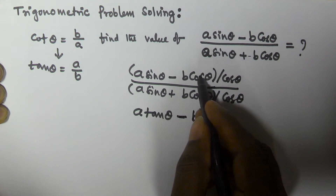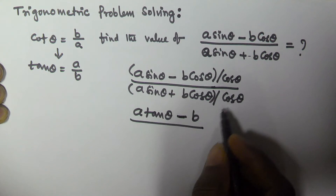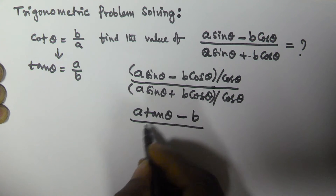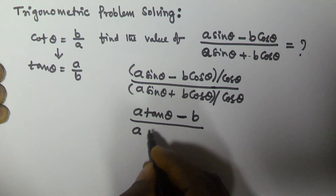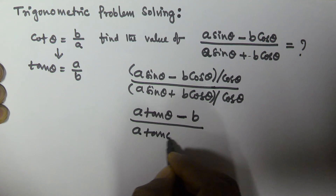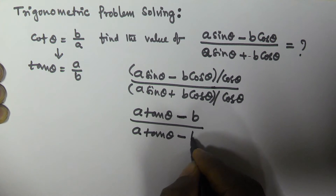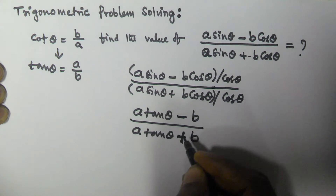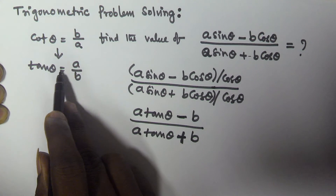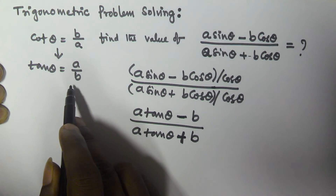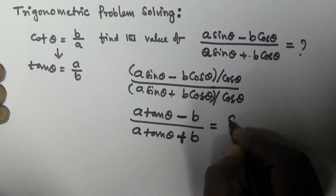The cos theta cancels, so we are left with b in the numerator. Similarly in the denominator, we get a tan theta plus b. So now substituting the value of tan theta, which is a by b, into this expression.